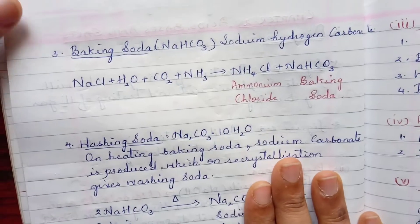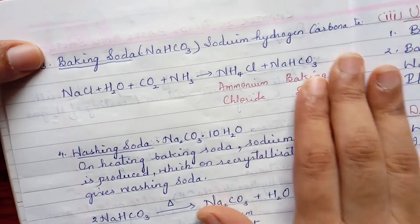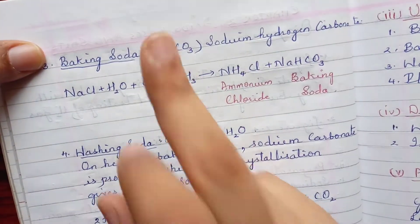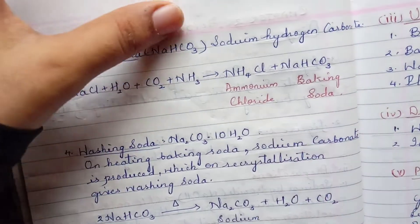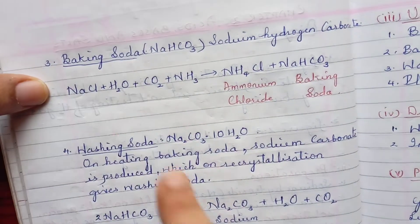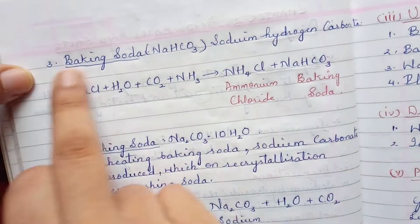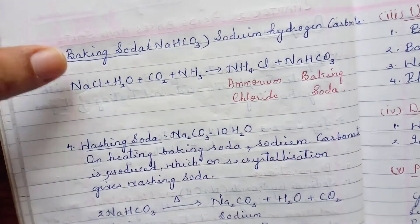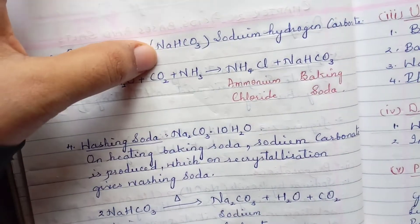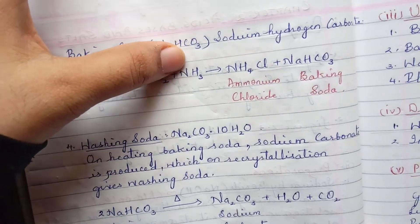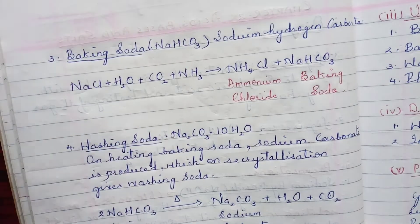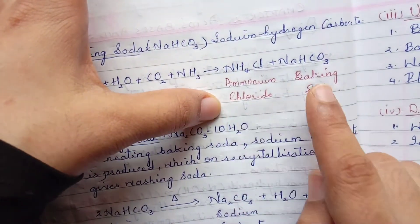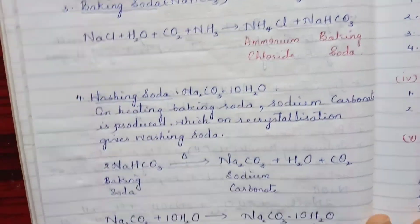Next is baking soda, which is nothing but sodium hydrogen carbonate. You just need to remember the reaction: sodium chloride, water, carbon dioxide, and ammonia — when they all react together you are going to get ammonium chloride along with baking soda.